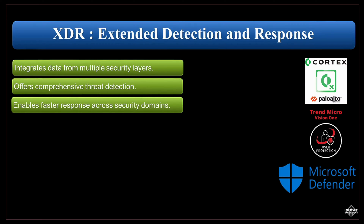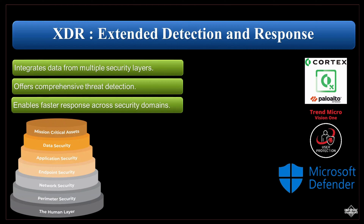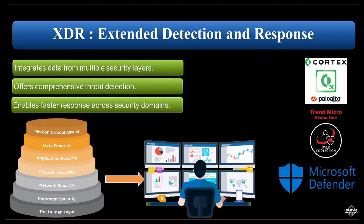To see XDR in action, consider a scenario where an organization's XDR platform detects suspicious network traffic patterns indicative of a possible cyber attack. The XDR platform correlates this with endpoint data and cloud activity, providing a comprehensive view of the attack. The organization's security team can then quickly respond to contain the attack and prevent further damage.